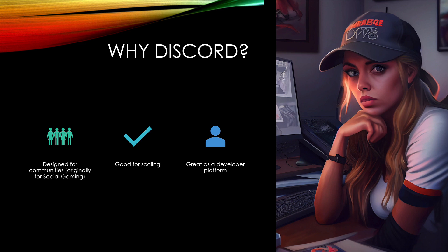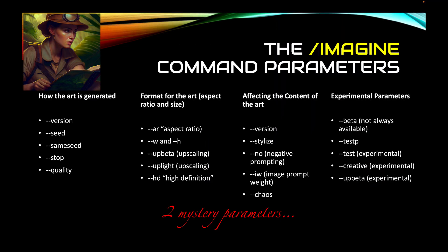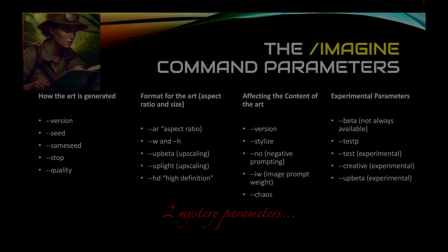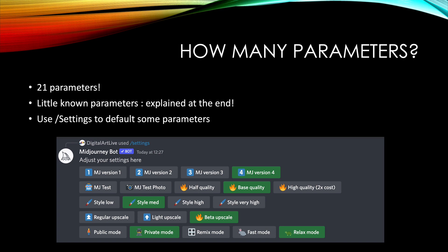All the parameters I'll be talking about are used with the forward slash imagine command — the command that actually generates your AI art. There are at least 21 parameters at the last count in November 2022. I'll classify these and mention a few that are the most important, as well as some little-used parameters that are quite surprising and powerful. Keep watching and I'll explain about these secret parameters towards the end of the video. The good news is that you can set a number of these parameters to default, so you don't need to worry about typing them in each time you want to generate art.